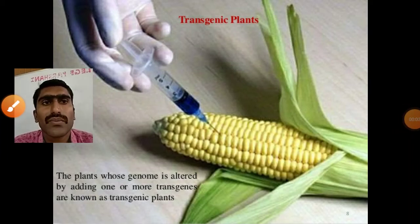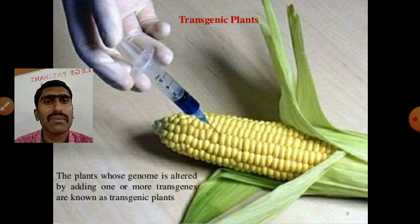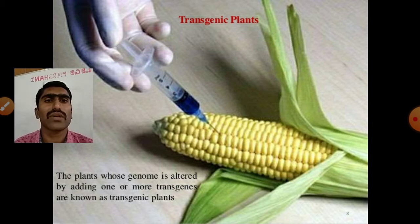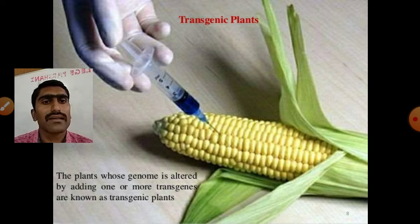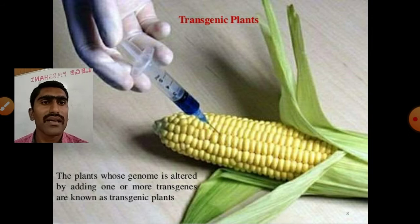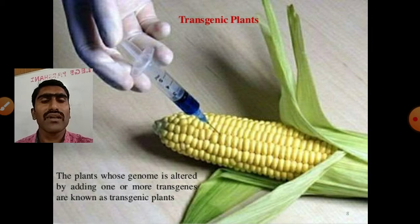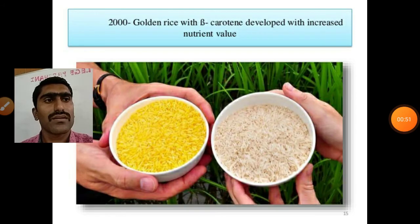Welcome students to this video on transgenic plants overview. Today's topic is transgenic plants. In my earlier previous video, I discussed that transgenic plants are the plants whose genome is altered by adding one or more transgenes. The plant whose genome is altered is known as a transgenic plant, and the crops are known as transgenic crops, and the organism is known as a genetically modified organism.